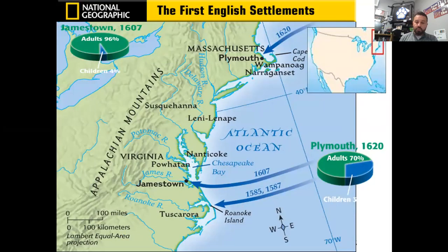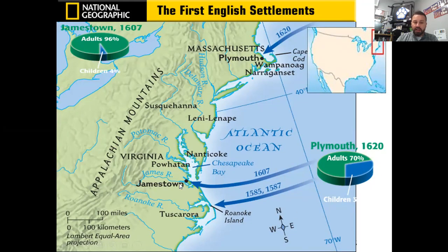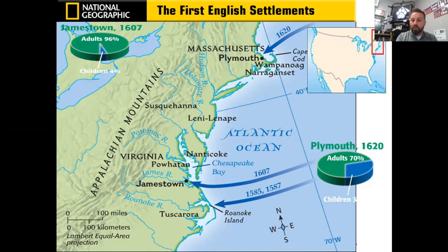Quick review: the British started a couple of colonies. The first one didn't work out so well — Roanoke failed. Jamestown has been blisteringly tough, but it's starting to work out. Plymouth also started off really tough, but with the help of the Wampanoag Indians they were able to succeed. These two colonies — Jamestown and Plymouth — are the start of American history.